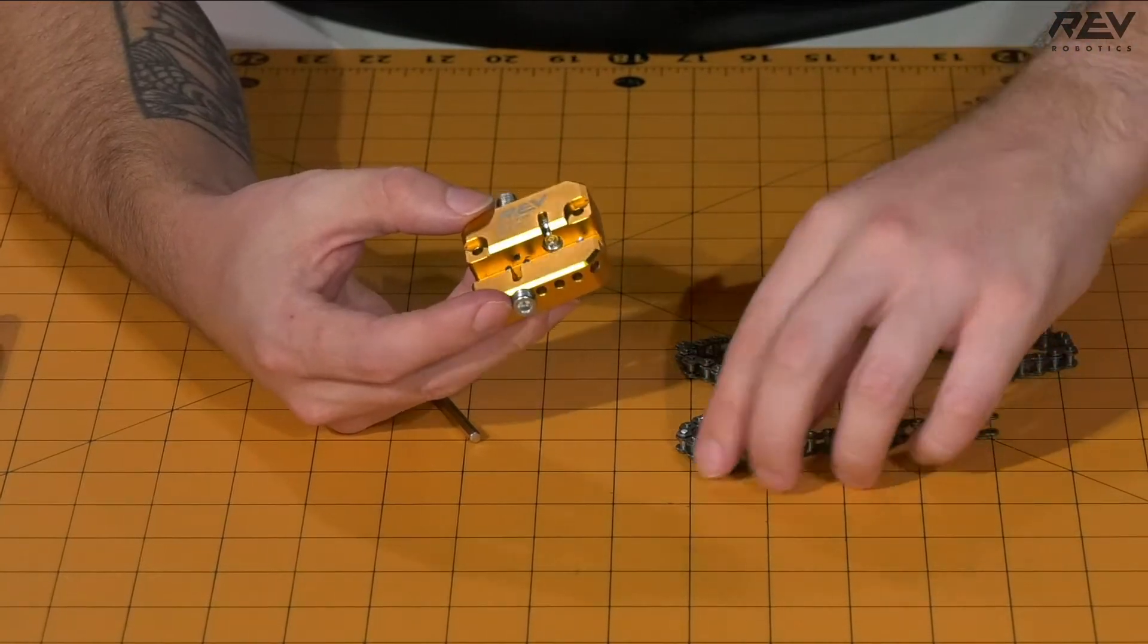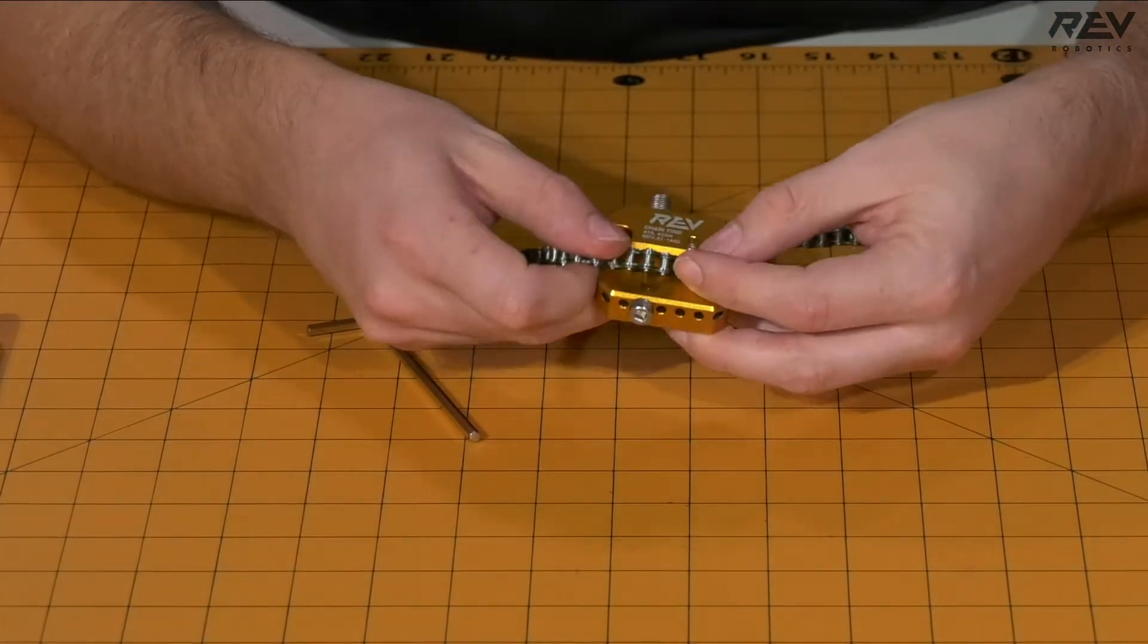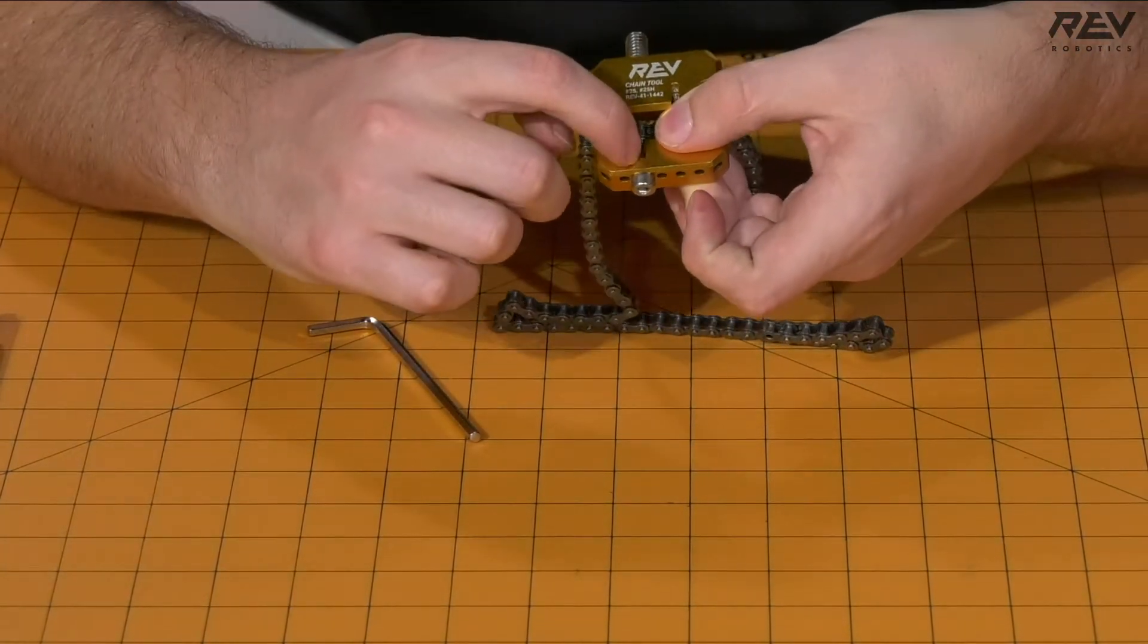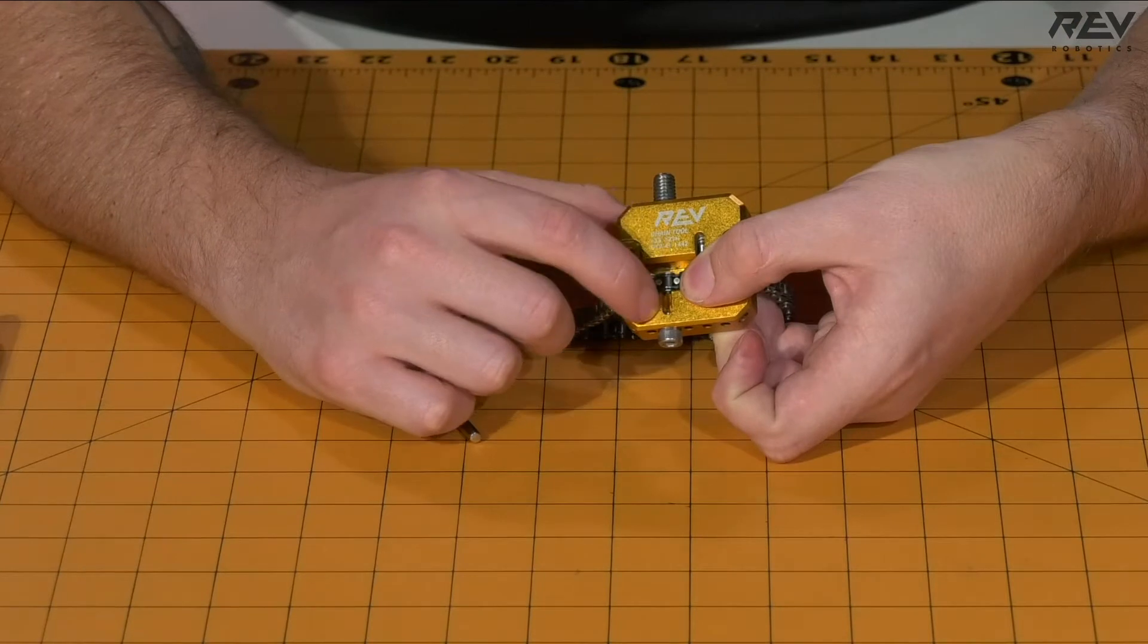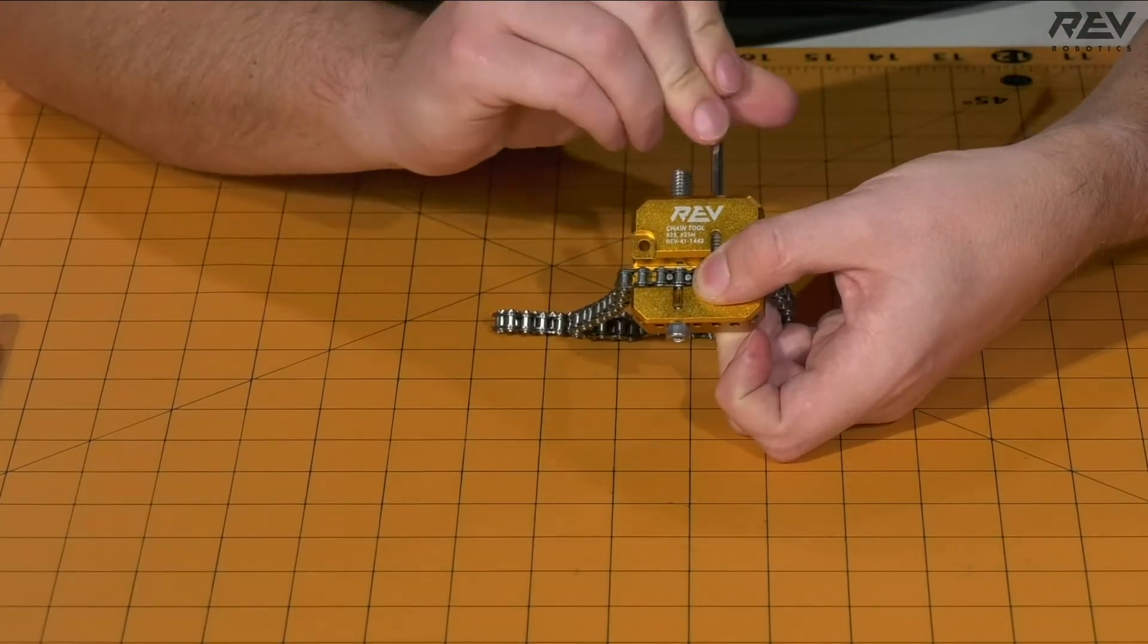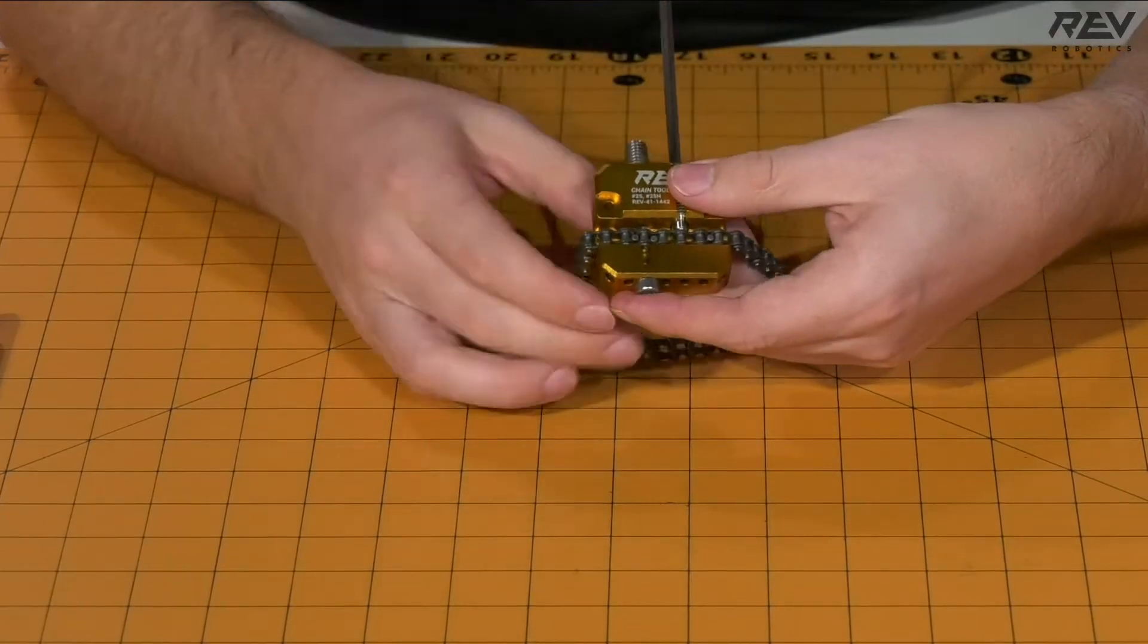So from there, we're going to go back and find our pin that we wanted to break. And we're going to take that pin and align it up to the hole that is with our chain tool here. Once that's complete, we're going to want to hold the chain in place. So we screw down this segment here to make that nice and snug.